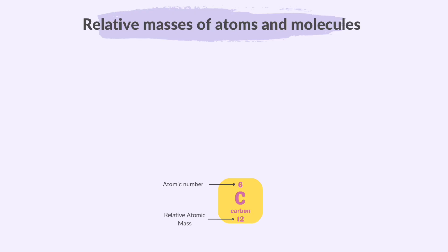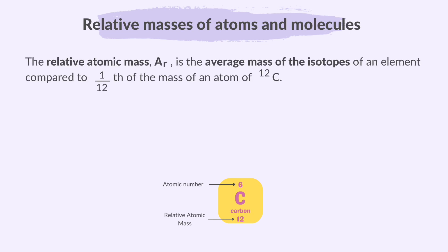The relative atomic mass of an element is a number you find on the periodic table right next to the element's name and atomic number. The relative atomic mass is the average mass of the isotopes of an element compared to one twelfth of the mass of an atom of carbon-12. The fixed mass of a carbon-12 atom is like a standard reference point for comparing the masses of all other atoms.